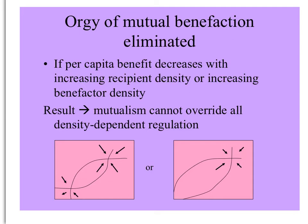However, if you consider that the per capita benefit per additional individual of a mutualist species decreases with increasing recipient density or increasing benefactor density, you get a balancing result: mutualism can't override all of the density-dependent regulation, competition, etc. So this stabilizes the model.